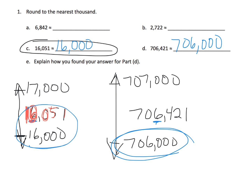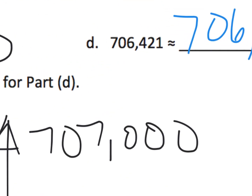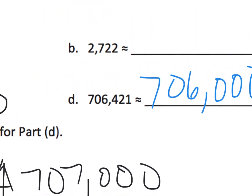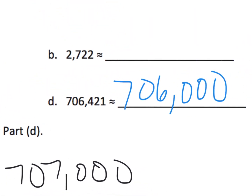The idea is just looking at the digit that matters. In this case, we're rounding to the thousands place, and then the remaining digits tell us whether we are closer to 706,000 or closer to 707,000.